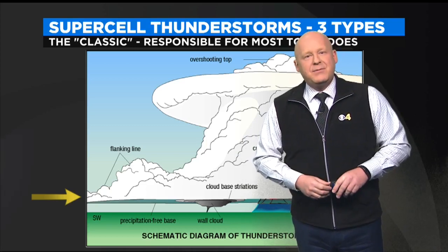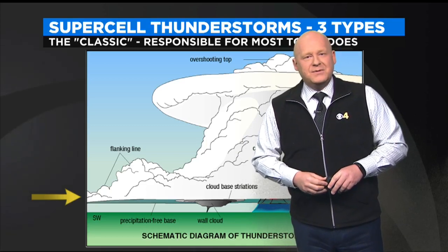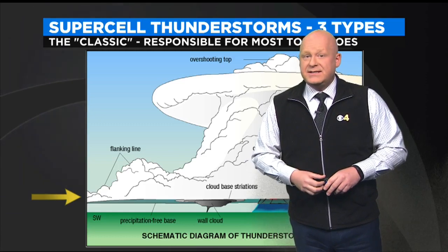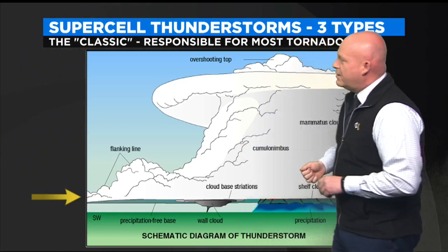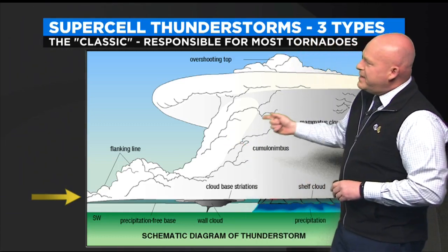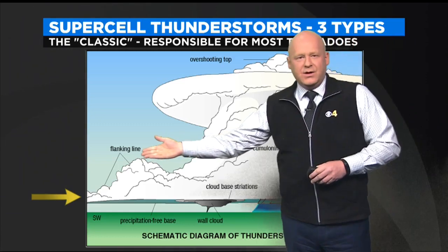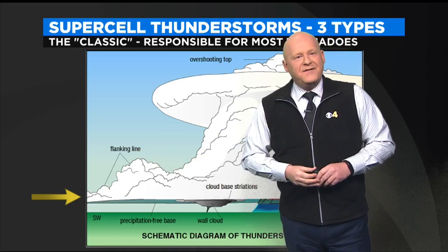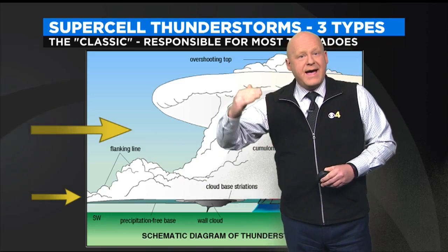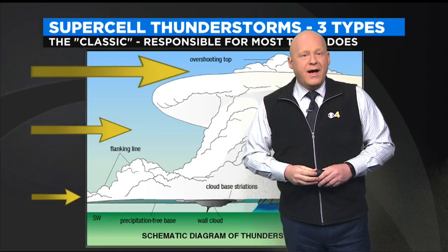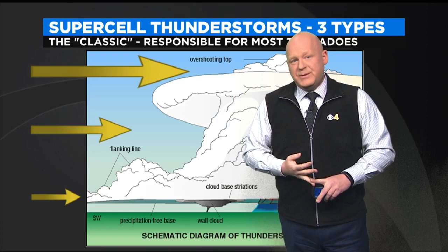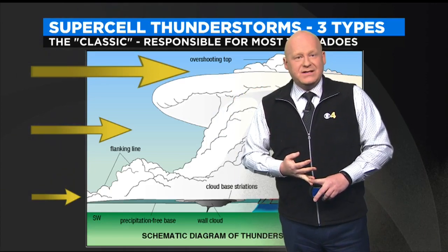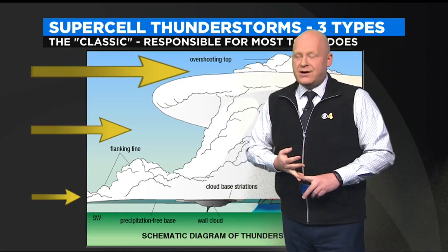Severe storms are a little bit different. You remember ordinary storms only last 15 to 30 minutes, whereas a severe storm can go much longer. This is a big key to it. See the gold arrow here on the left. As we get away from the ground and go up, the wind speeds become stronger and shift direction. And this is called shear.